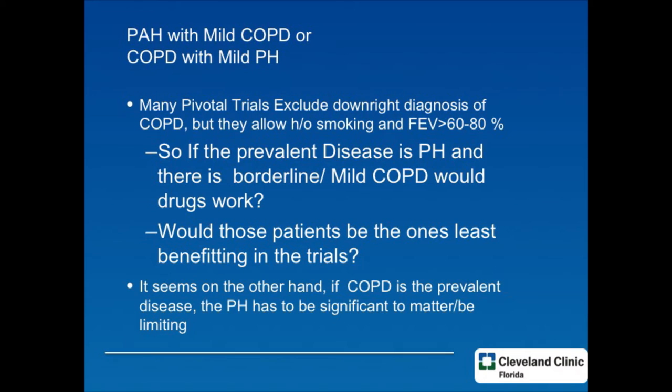What we haven't done is go back and see if those were the people that brought results down, which is possible. Nevertheless, they were part of the trials. There may be logic to say that if the COPD is very mild, you can essentially say you're dealing with simple PAH with incidental mild COPD on top of it and treat accordingly — with an eye towards the COPD in case it's underestimated, especially if you end up with VQ mismatch and other strange occurrences after starting the drugs.